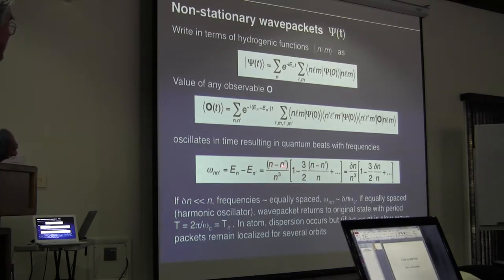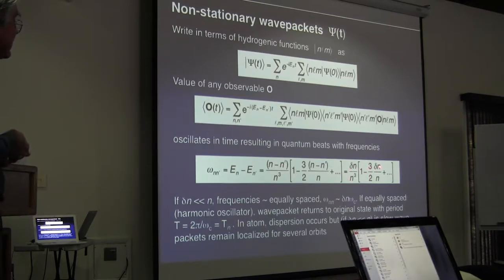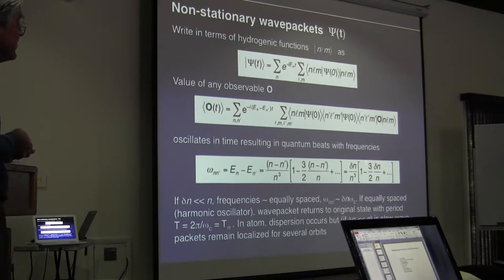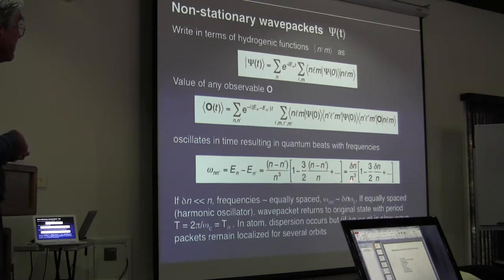Doing a simple Taylor series expansion, you can show those frequencies are given by delta_n over n cubed times (1 minus 3/2 × delta_n over n), plus higher order terms. At very high n — up to 300 or 600 — and for a wave packet of a few n, this correction term is very small. So to first order, the various frequencies are equally spaced, governed by delta_n. One over n cubed is the classical orbital frequency, so the energy levels are approximately equally spaced, making the system essentially a harmonic oscillator.